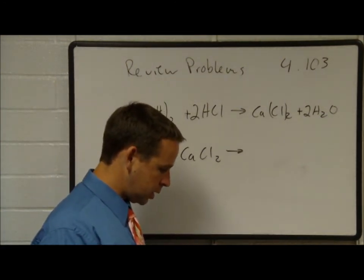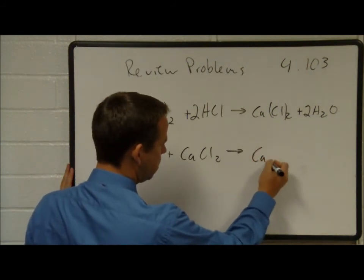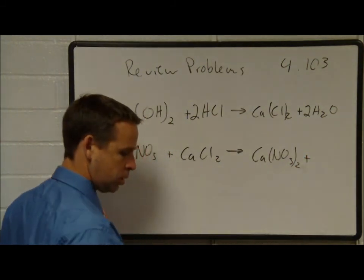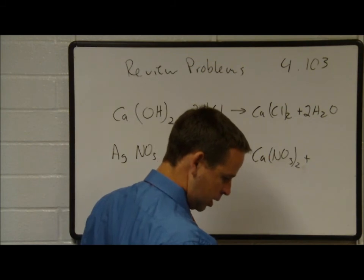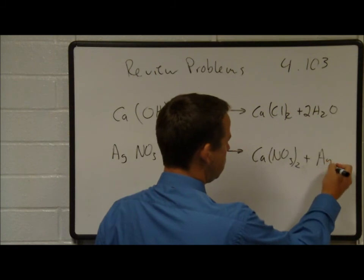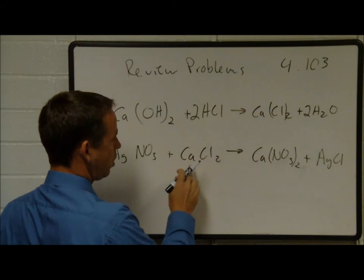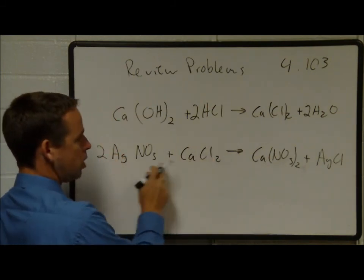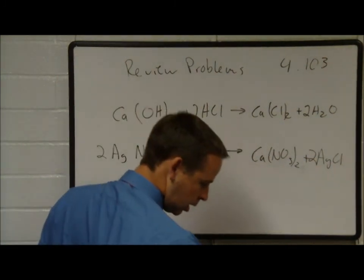The next one is silver nitrate and calcium chloride reacting to form calcium nitrate and silver chloride. Calcium has a plus 2 charge, so there must be 2 nitrate ions since nitrate has a minus 1 charge. We have 1 calcium on the left, 1 silver on the left, 2 nitrates — so we need 2 chlorides. That one is balanced.